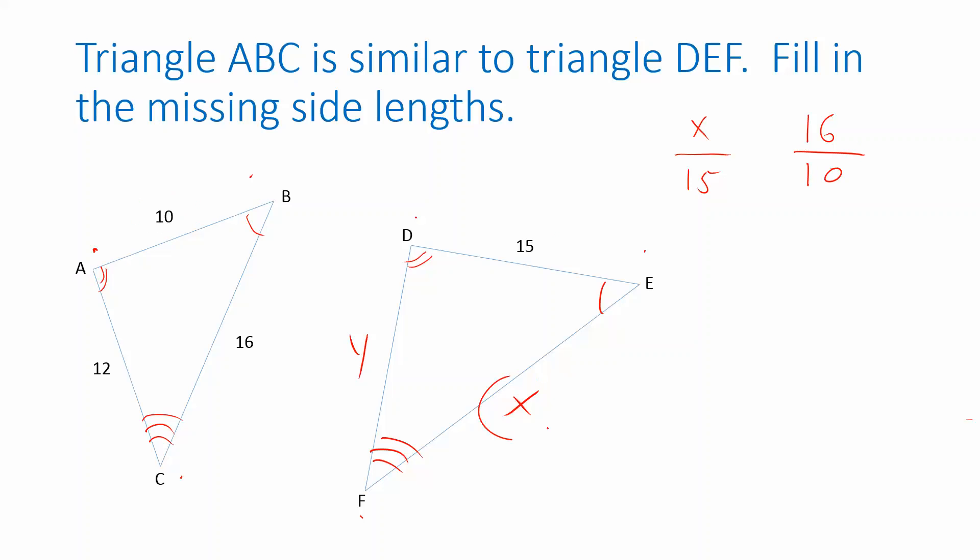So we're taking a ratio. This matches up with this, so we put both of those in the numerator. This matches up with this, so we put both of those in the denominator. And because they're similar triangles, we know these ratios are the same value. Now we can use that to figure out what X is. I can isolate X here if I multiply both sides by 15. So I have 16 over 10 multiplied by 15, and that works out to be 24.